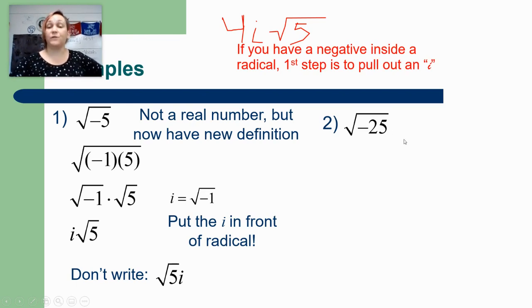So in this problem the first thing I'm going to do is I'm going to take the negative, it's going to hop outside and it's going to turn into the letter i, the number i. It's a number, it's not a variable. And then just proceed as per usual.